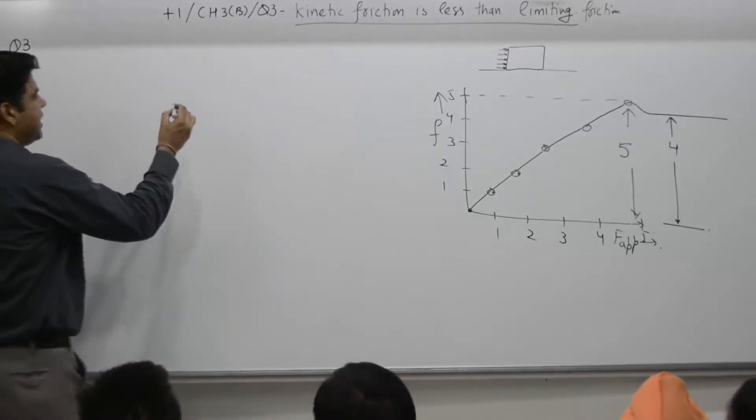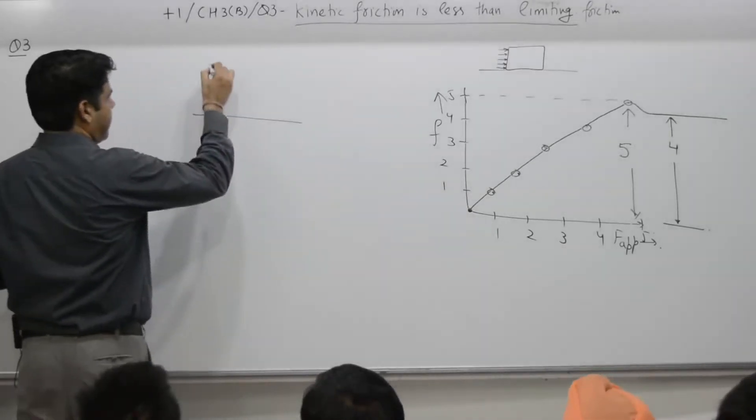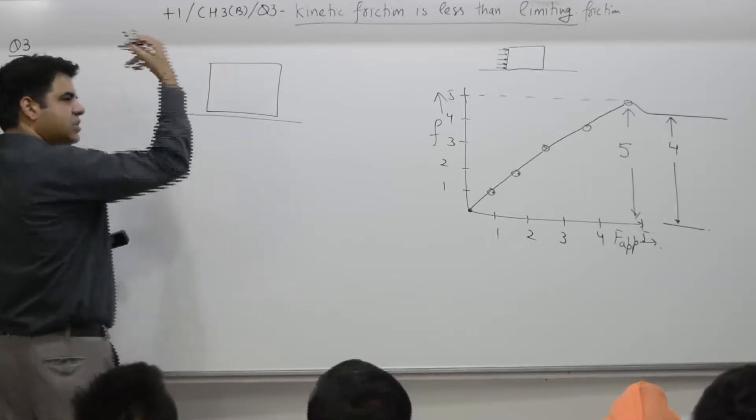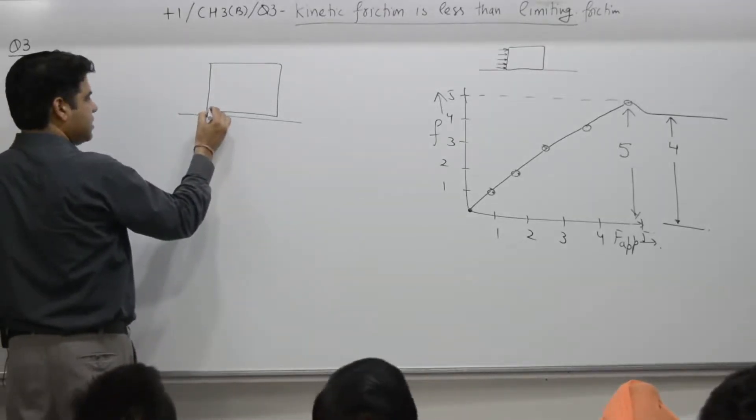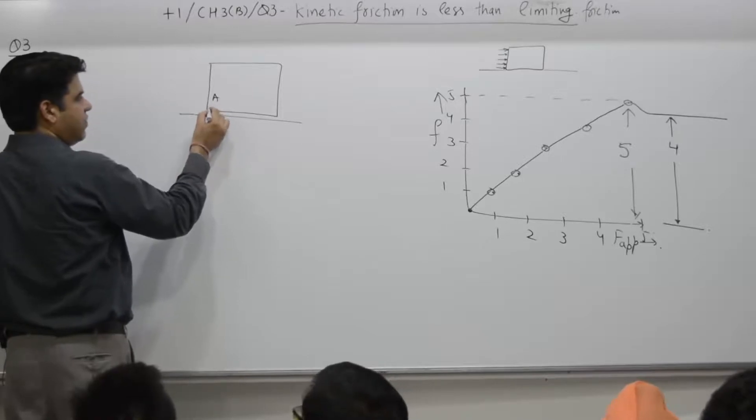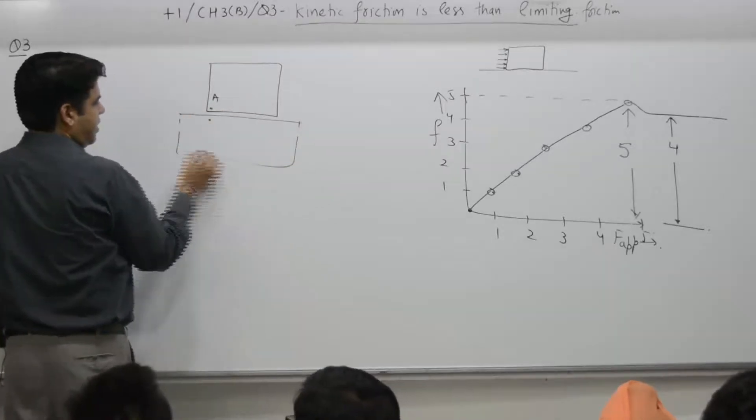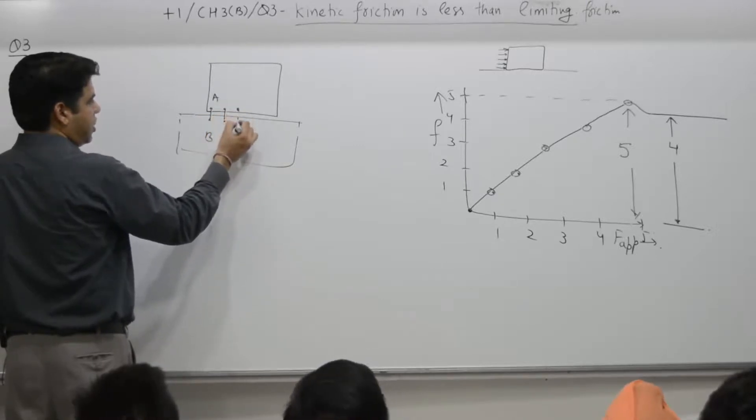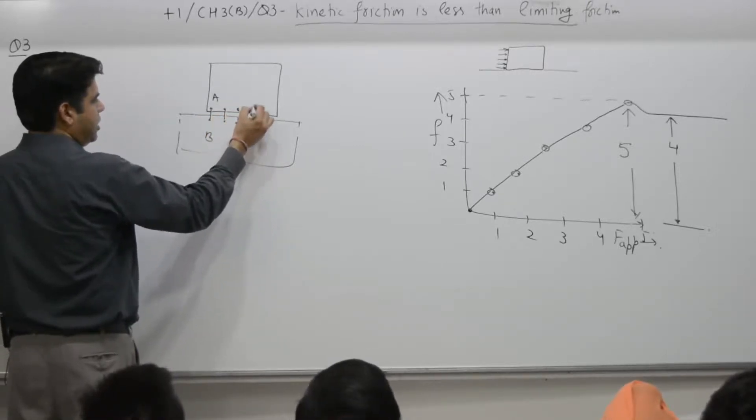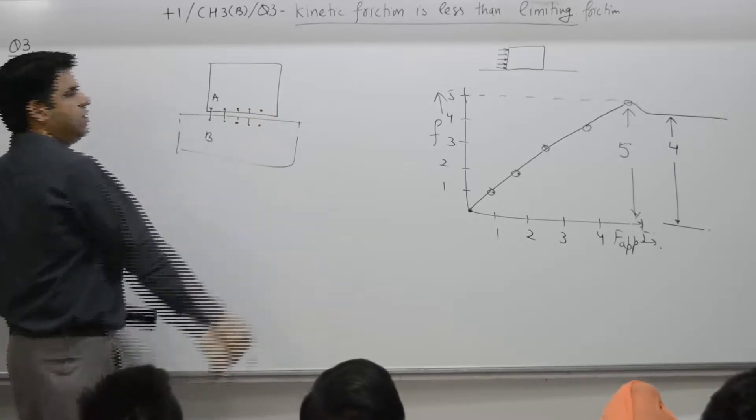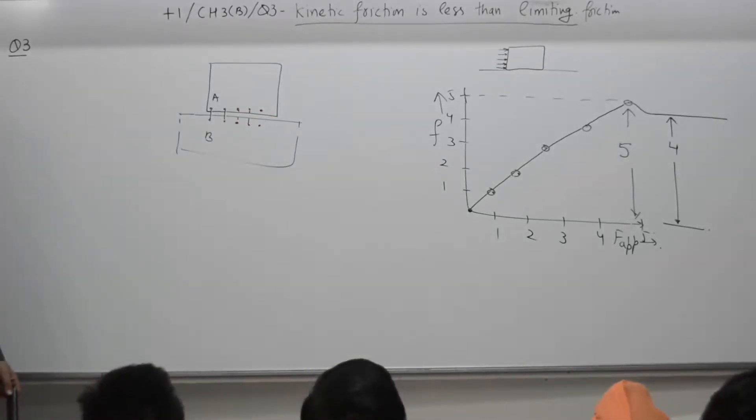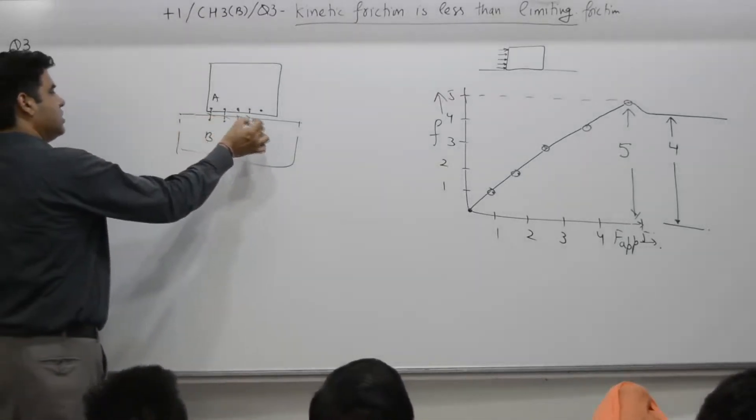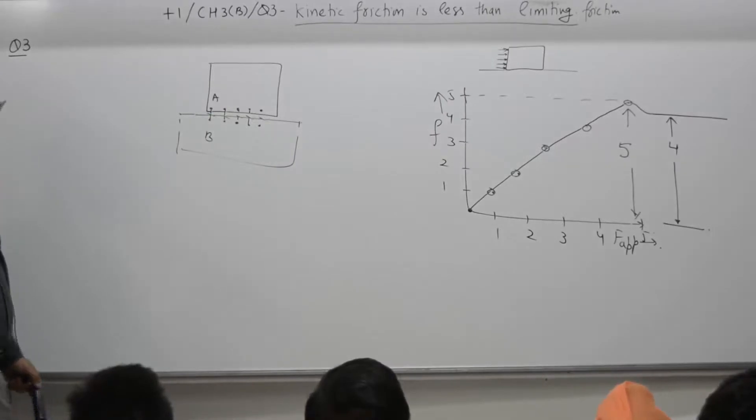Now the reason is: one object, another object, it is at rest for say number of hours, then atoms of A develop strong bond with atoms of B. This is one. It is difficult to break. It is difficult to break these bonds. You will have to work against these attractive forces.